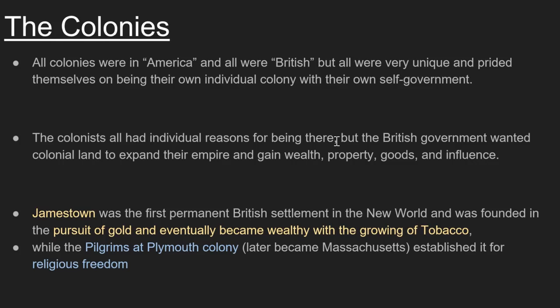Jamestown was the first permanent British settlement in the New World, founded in pursuit of gold in 1607. They didn't find any gold — they eventually gained wealth through growing cash crops like tobacco. But some came not seeking wealth, but seeking religious freedom: the Pilgrims at Plymouth Colony, which later became part of Massachusetts Colony. So other colonies began to form to give more liberties and freedoms for a greater variety of people and religions.